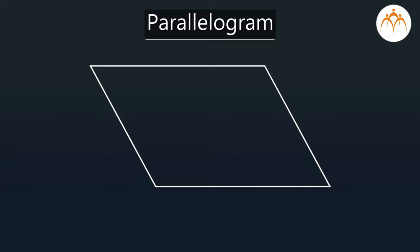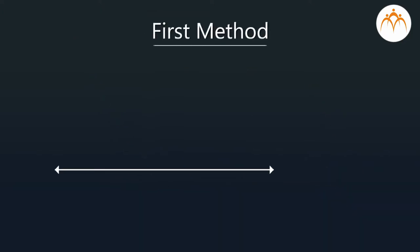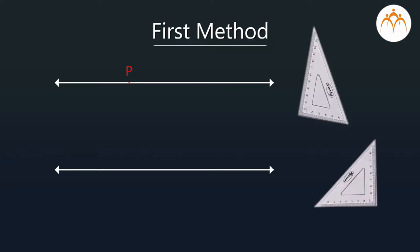We need to learn how to draw a line parallel to the given line. Let us see how to draw a line parallel to the given line through a point outside this given line, by a method in which we are going to use two set squares.